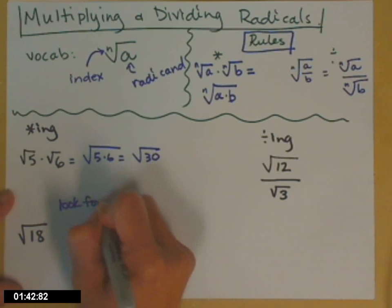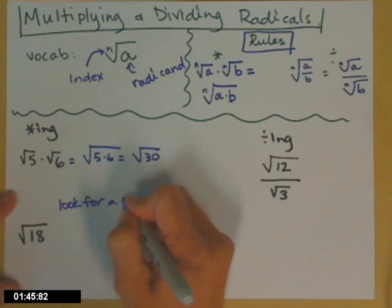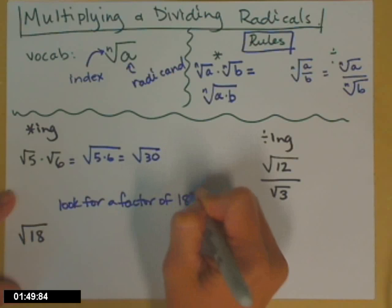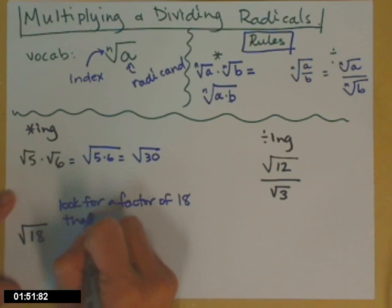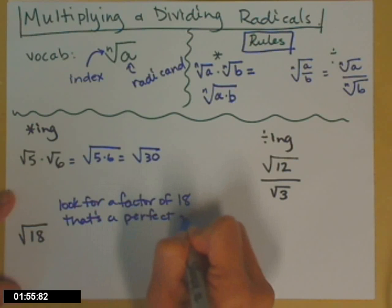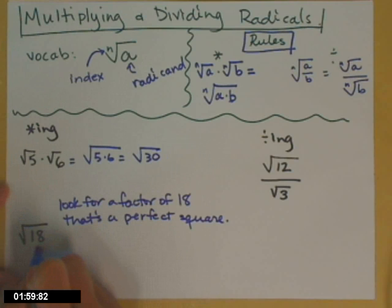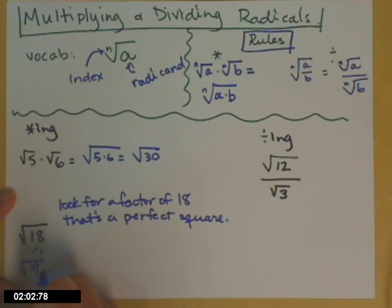So look for a factor. A factor is a number that goes into nicely. Factor of 18, the radicand, that's a perfect square. So while I'm writing, you were thinking, and I'm sure you all came up with, 9.